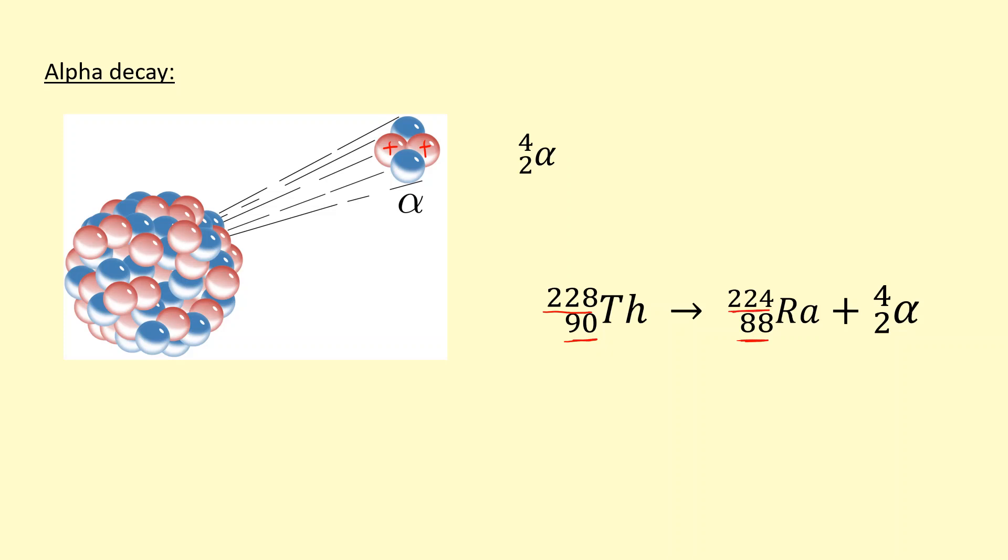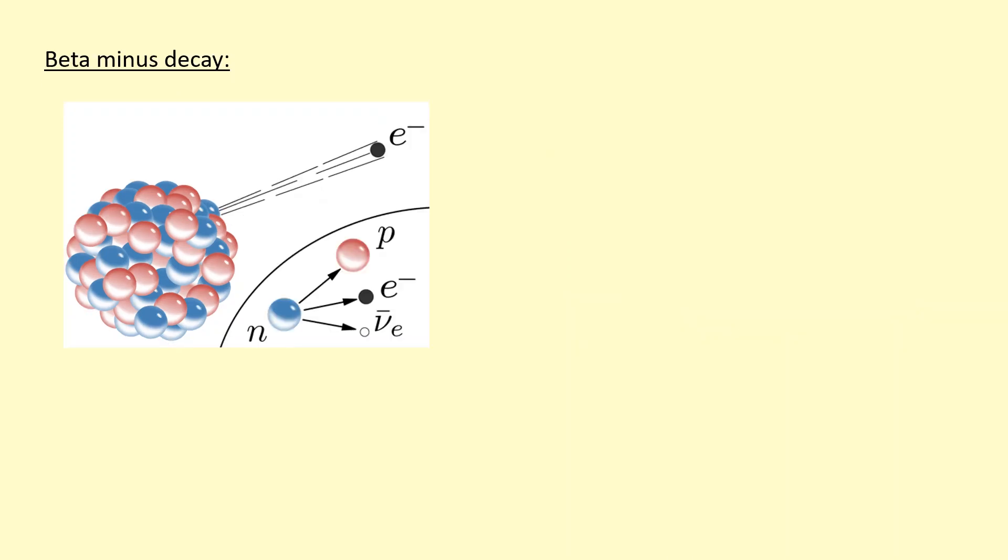Another possible decay is beta minus decay. This tends to happen when the nucleus has too many neutrons. A neutron inside the nucleus turns into a proton. This proton stays inside the nucleus, however an electron is ejected out.